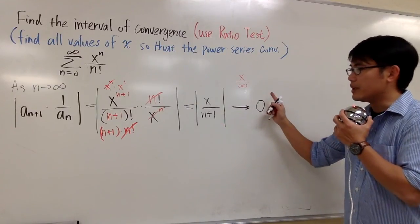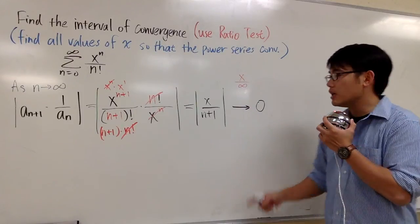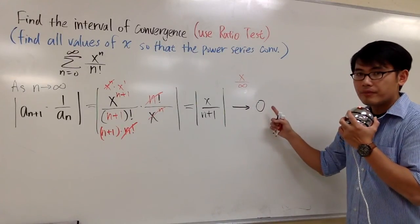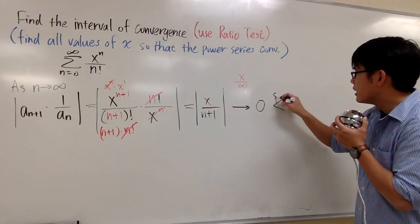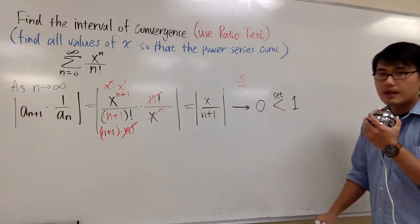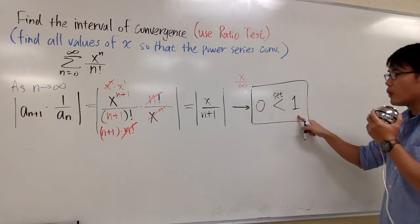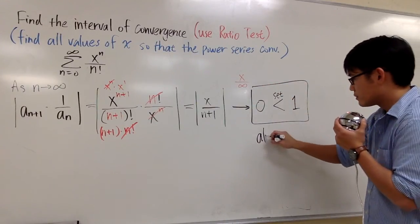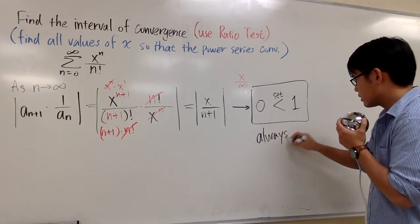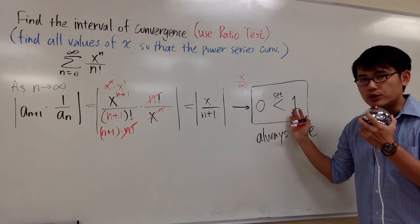So this is the limit that we get after we run through the ratio test. And then the ratio test says, look at the limit right here and set it less than 1. And then you see that this right here, 0 is less than 1, which is always true.